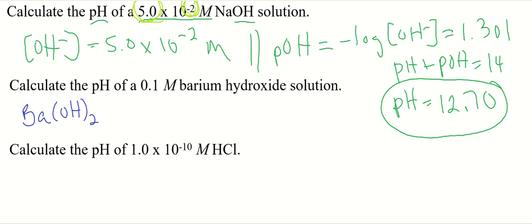In other words, there's two hydroxides for every barium hydroxide. It's a strong base. So if we start with 0.1 molar of barium hydroxide, you're going to get 0.2 molar of hydroxide, because there's two of them for every barium hydroxide. So we have the OH concentration, so we'll do the same steps as we did right above it.